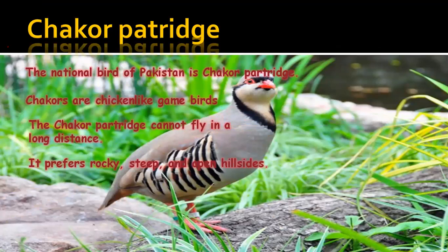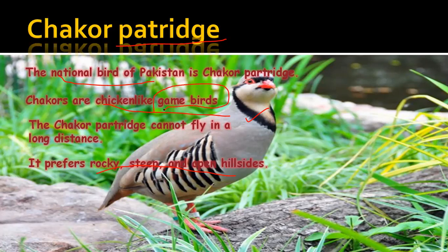The next species is the Chakor Partridge — a chicken-like gaming bird and the national bird of Pakistan. It cannot fly long distances because it is a little heavier than a chicken. It prefers rocky, steep, and open hillsides as well as some dry places. It is a very lovely bird, but its population is also declining due to hunting, as it is used for gaming purposes.